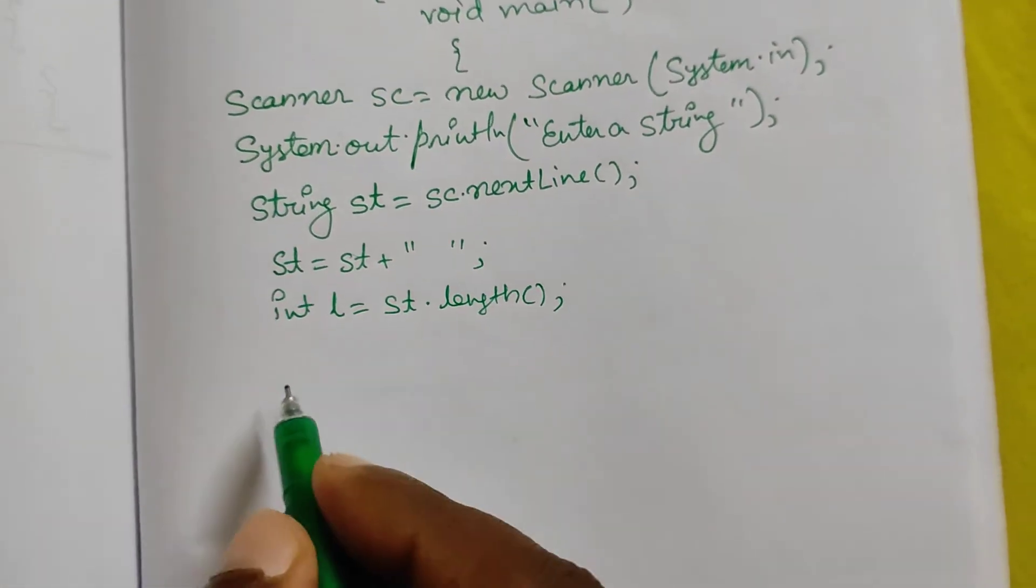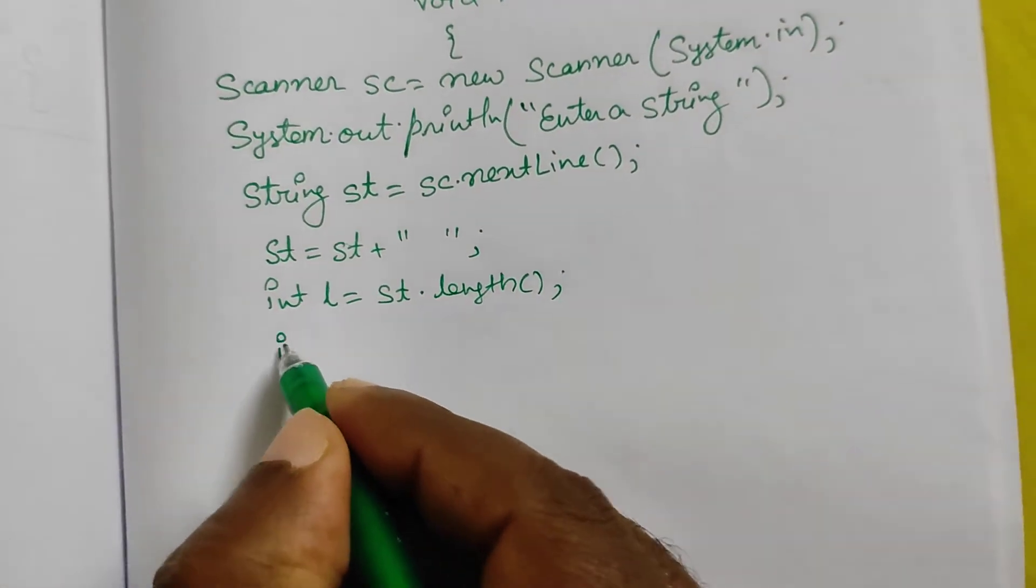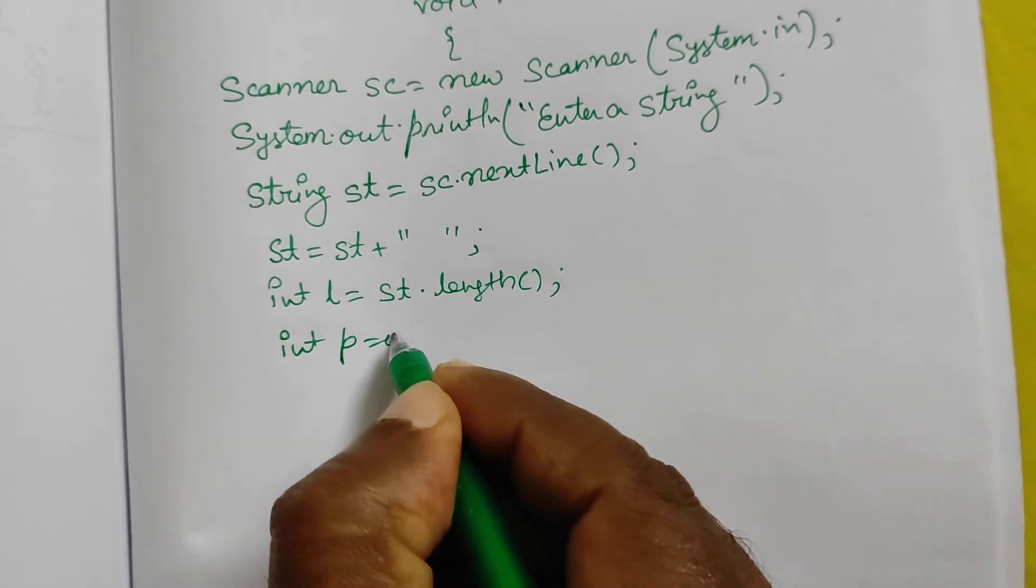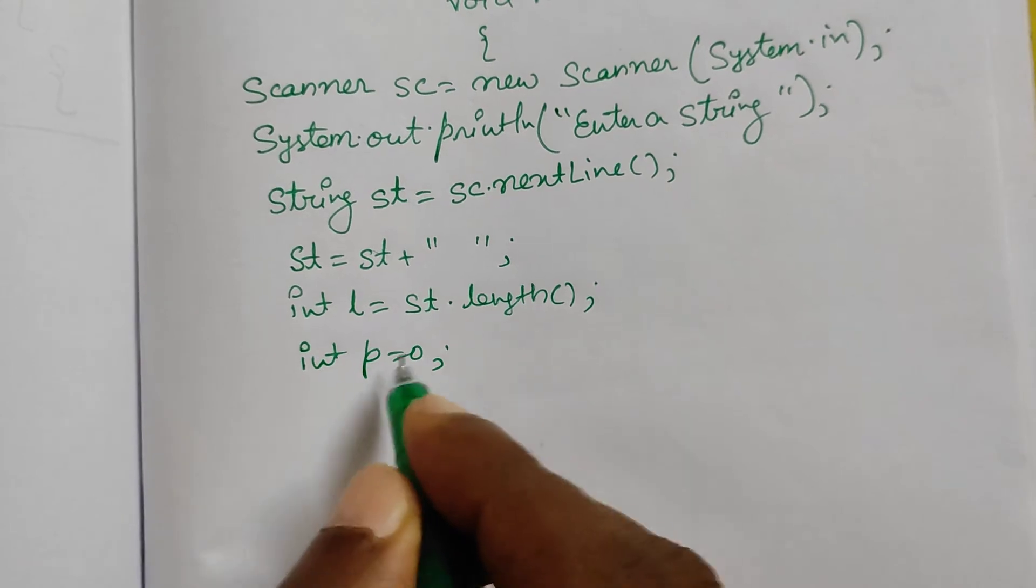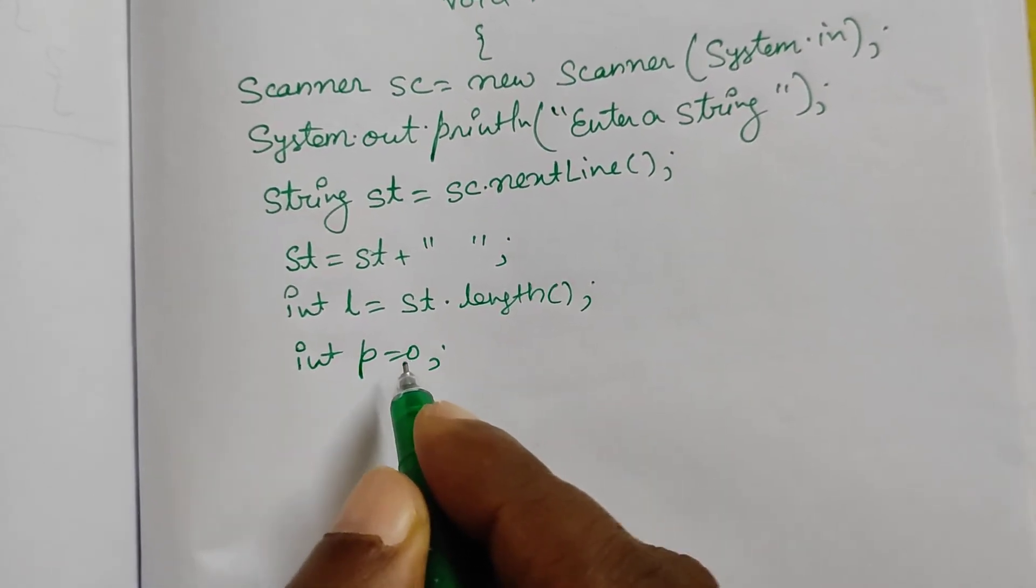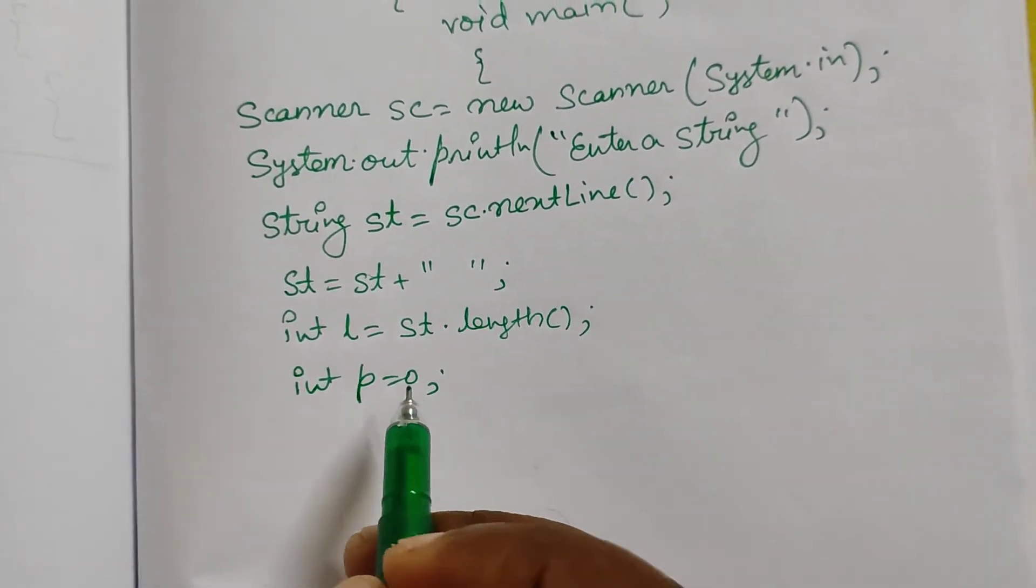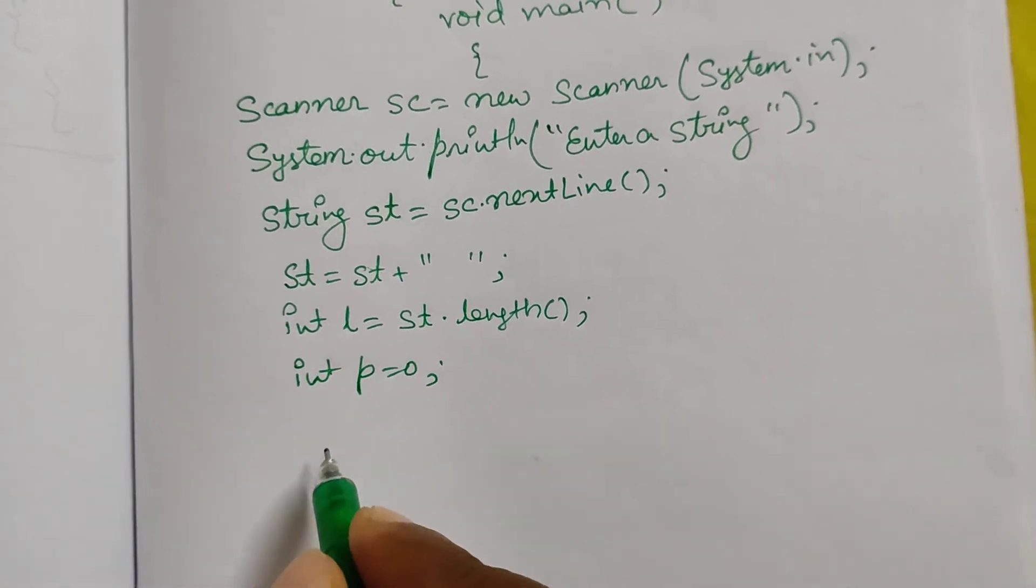Now we will take one variable p, p = 0. This is the first index position we are storing in p. Zero is the first index position because our index position starts from zero, for both string and array.